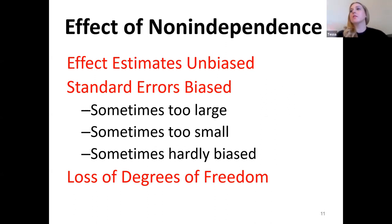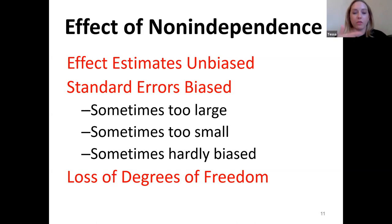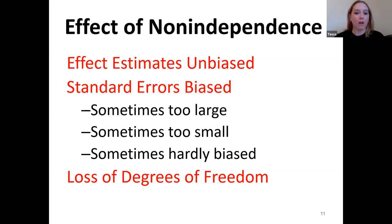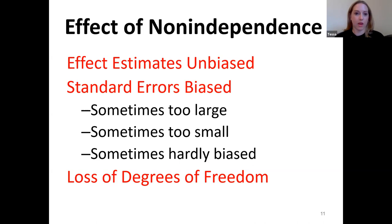What happens if you don't use dyad as unit? If you've collected 40 dyads and instead run an ANOVA on those 80 people treating them as if they're independent, you'll notice that the effect estimates are unbiased — these look like regression coefficients or standardized beta weights. However, the standard errors of the effects are actually biased, and they're not necessarily biased in one direction. Sometimes they're too small, sometimes too large, and sometimes hardly biased at all. You also have a loss of degrees of freedom.